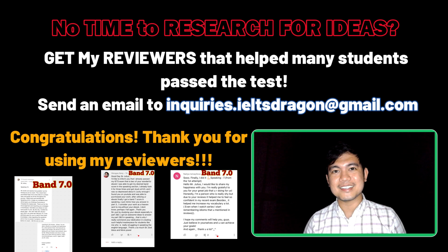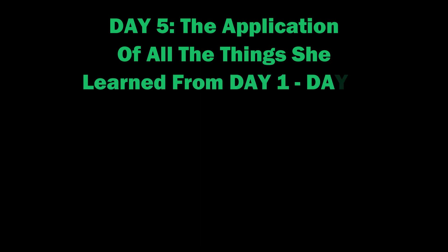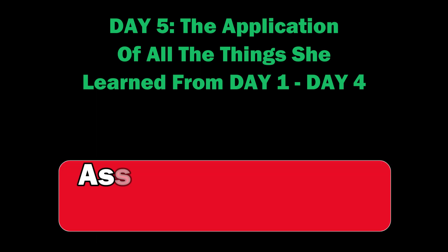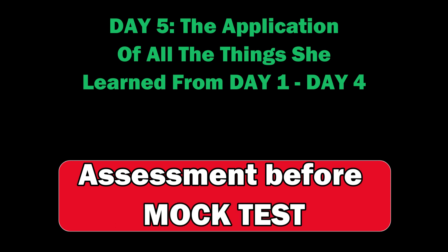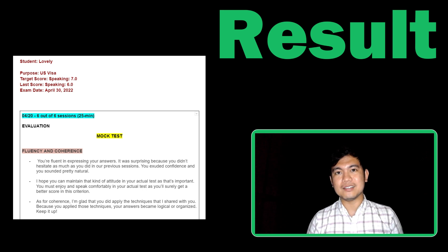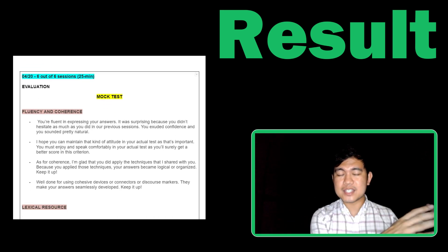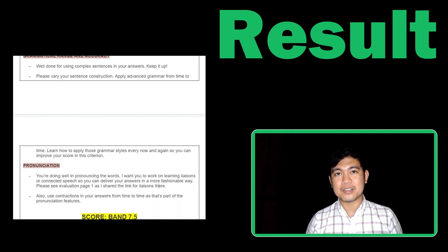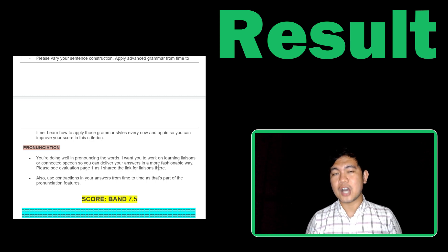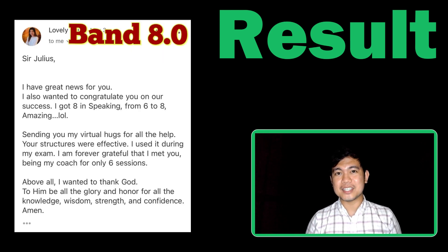Day 5 was the application of everything she learned from Day 1 to Day 4 — it was the day before her mock test. I always give a mock test to all of my students after they have learned how to answer Parts 1, 2, and 3, so Day 5 was our assessment before the mock test. Day 6: mock test. I was impressed because she performed well — those weaknesses from our previous sessions were addressed strategically. As a result, I gave her a band 7.5 based on the descriptors available online. However, her actual IELTS speaking score was better than her mock test — she got a band 8.